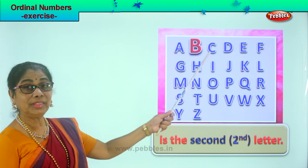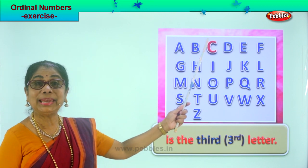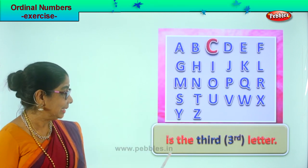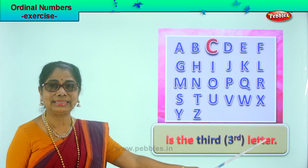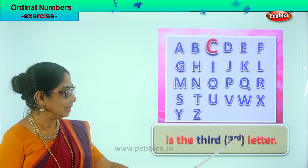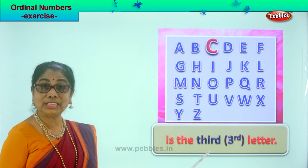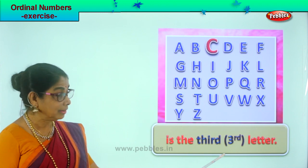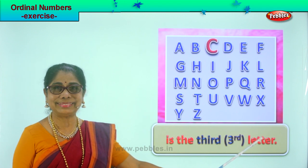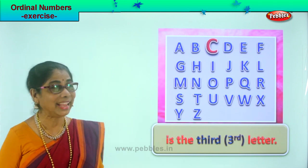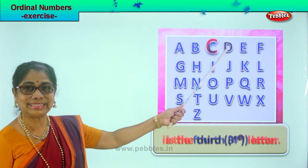Let's go on. The next letter is C. Letter C is the third letter. Look at the spelling — third. The representation is number three and RD. C is the third letter.